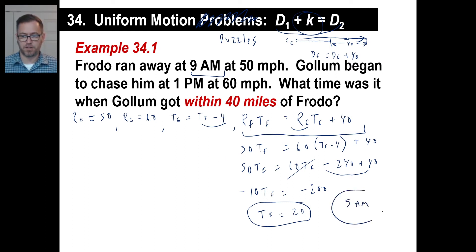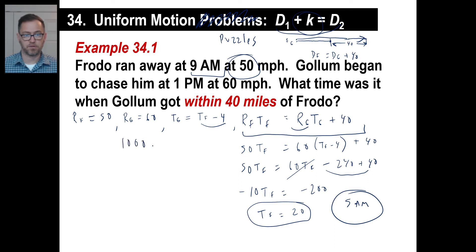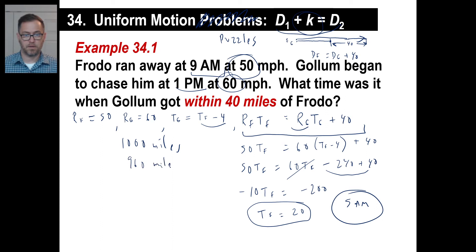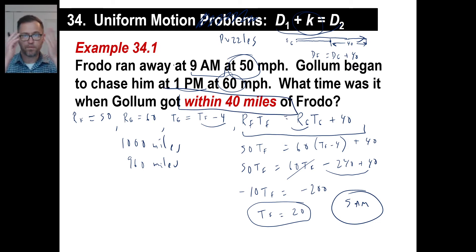Let's check. Frodo goes 20 hours at 50 miles an hour — that's 1,000 miles. Gollum starts at 1 p.m., so he runs 16 hours at 60 miles an hour — that's 960 miles. The difference is 40 miles, which is exactly within 40 miles. We proved it's correct.